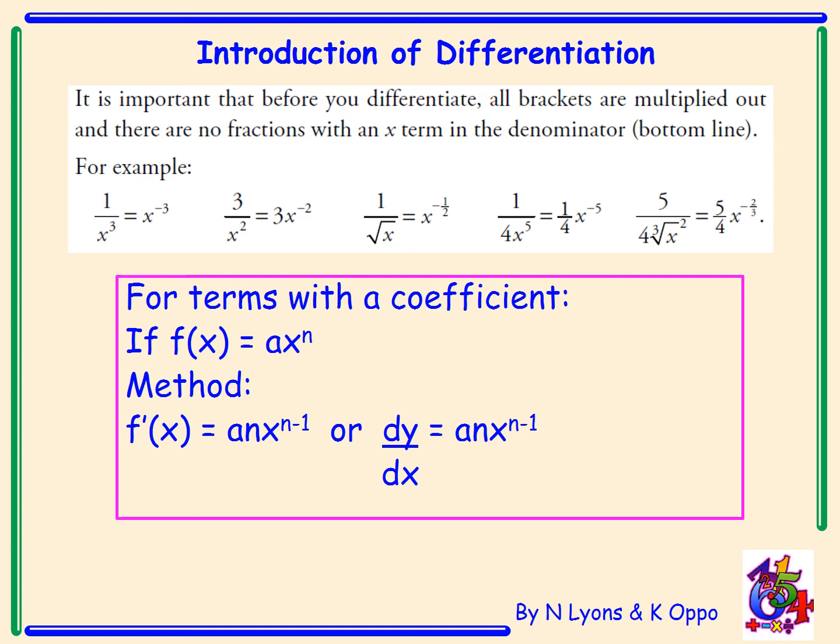If we have a coefficient in front of x, we do the same thing to differentiate. We bring the power down in front of x and the power gets multiplied with the coefficient. We still subtract 1 from the power. This will become clearer when we do some examples.